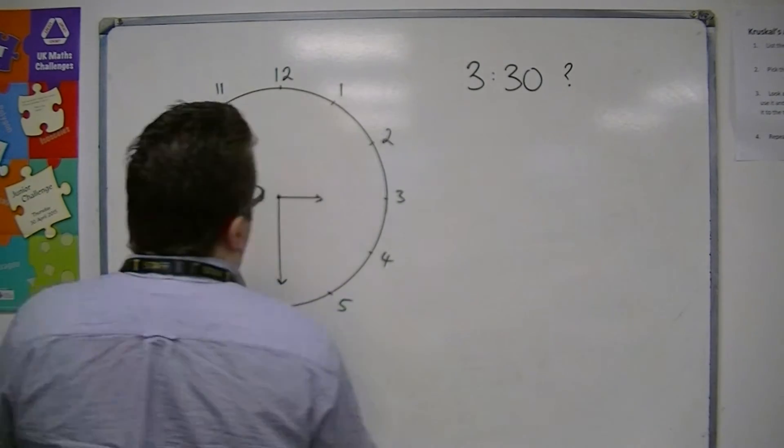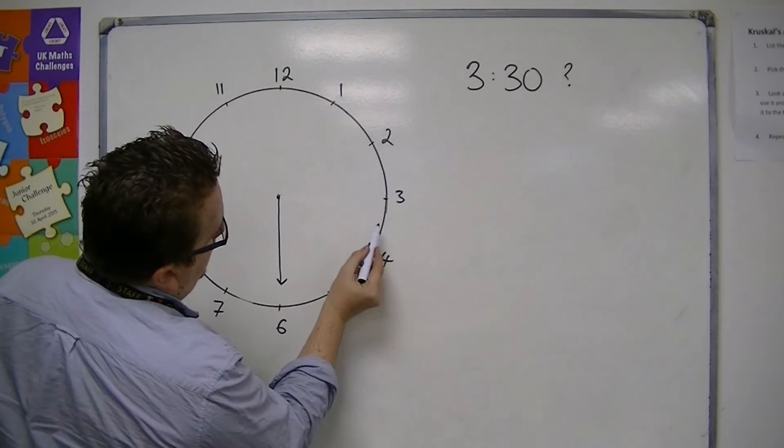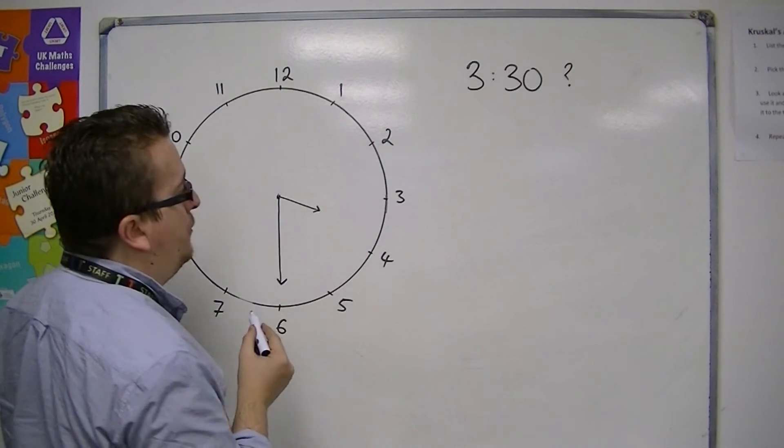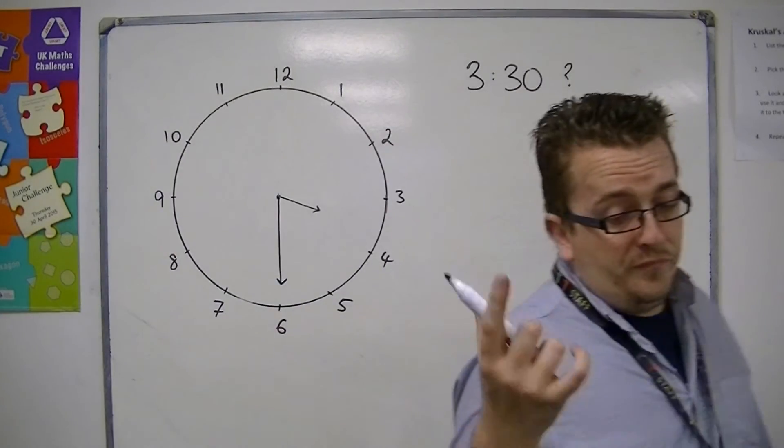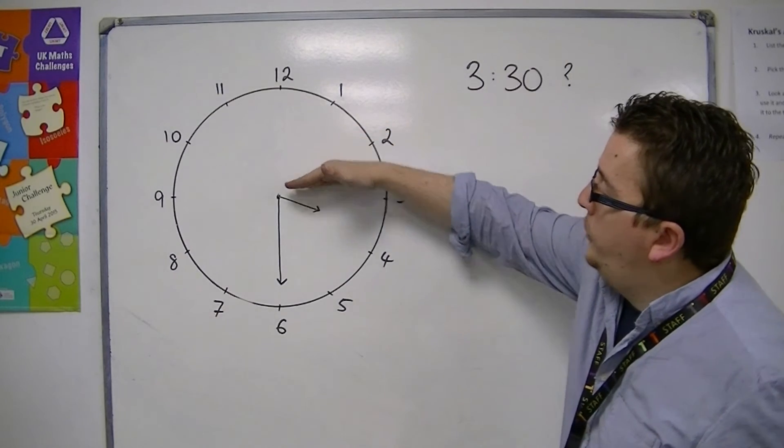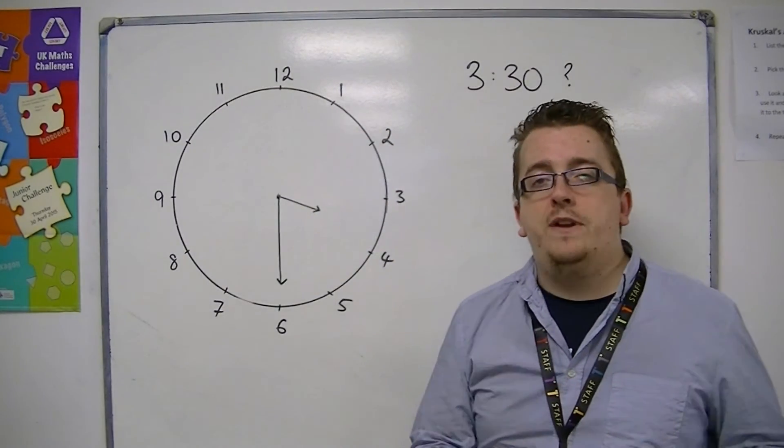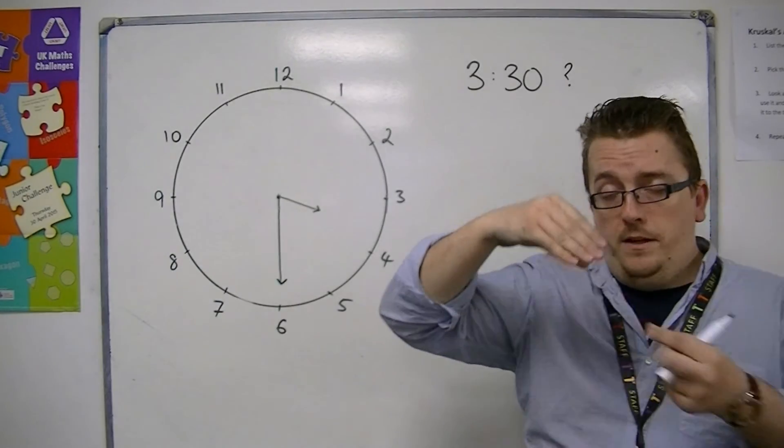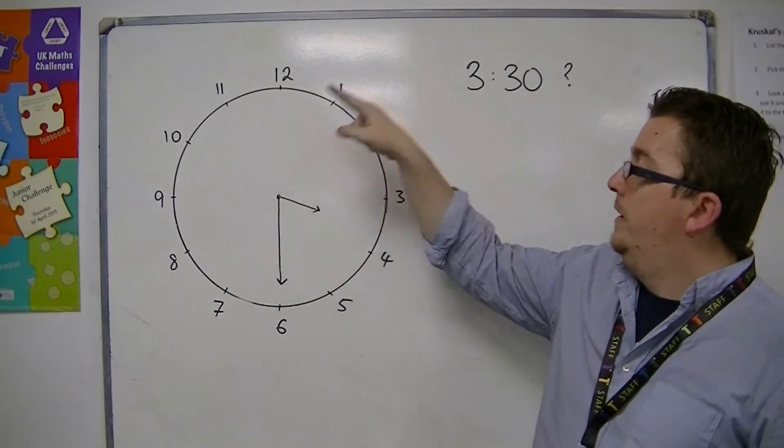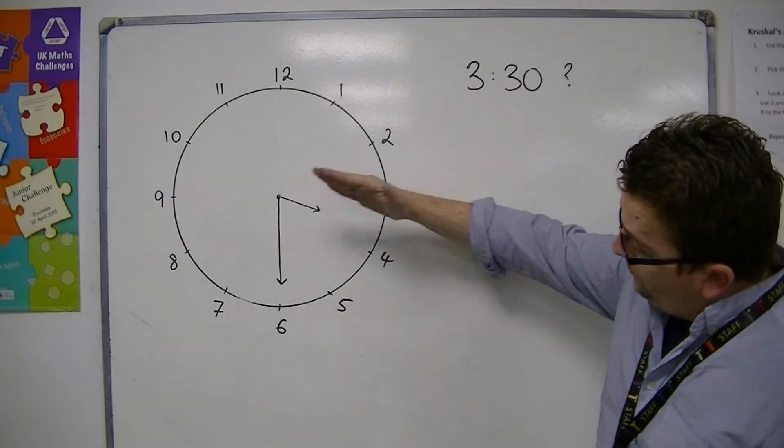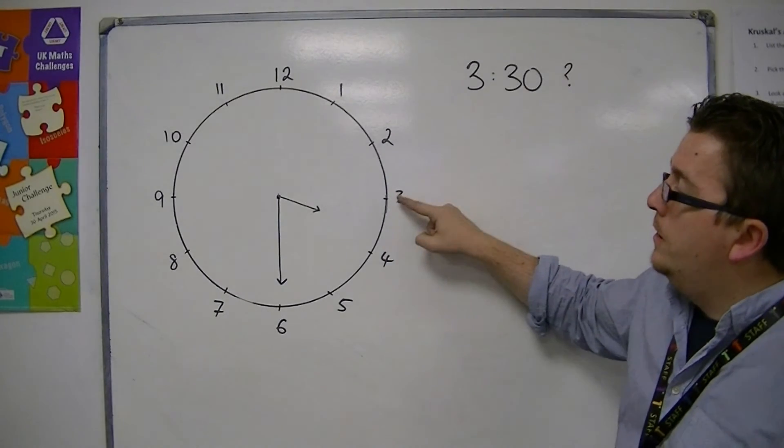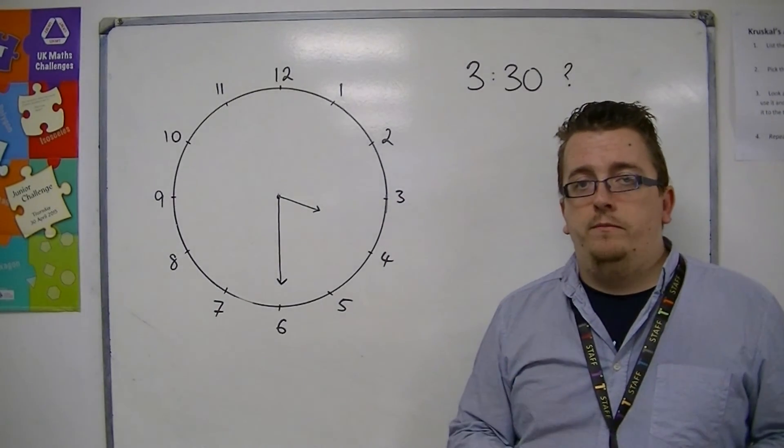It would instead be halfway between 3 and 4. So, the hour's hand doesn't just snap from 2 to 3, from 3 to 4 on the hour every hour. The hour's hand does move round as well, but at a slower pace than the large minute hand. And so, the hour hand should be pointing directly between 3 and 4 when you draw it.